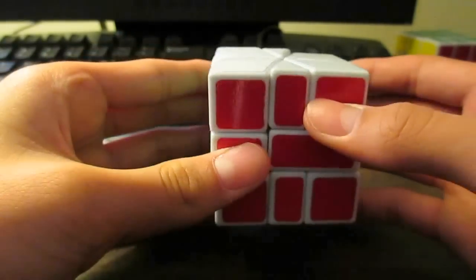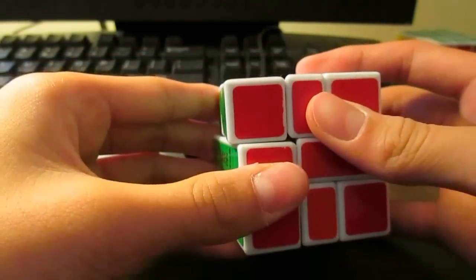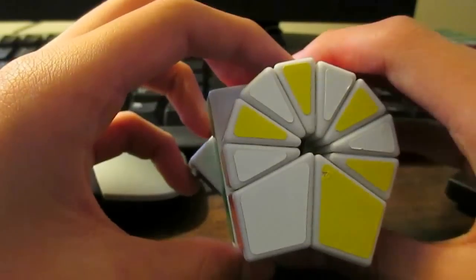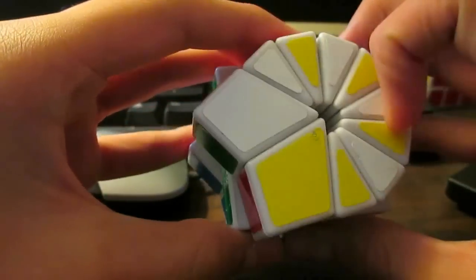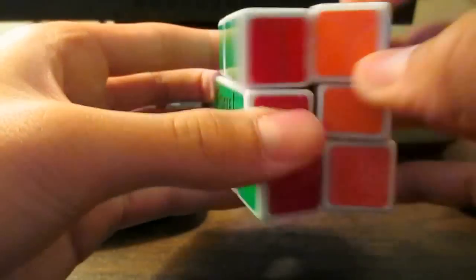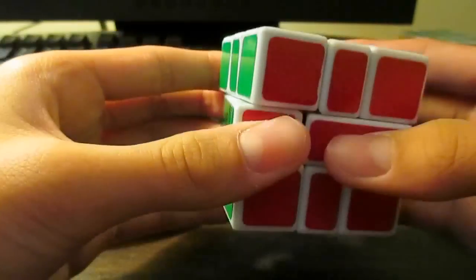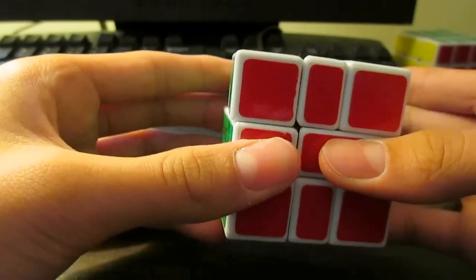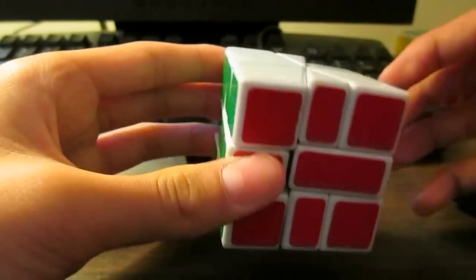So basically, when you just start out solving the square one, you learn to do a cube shape through this method by first getting all eight edges into one layer, then using an algorithm to get it back into a cube. That can prove very inefficient because the majority of the shapes take a lot of moves to get to that position.